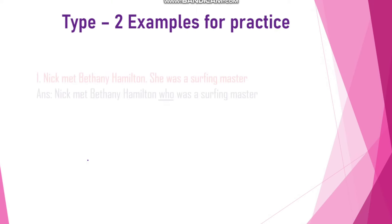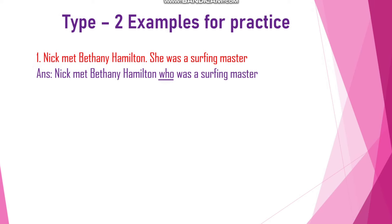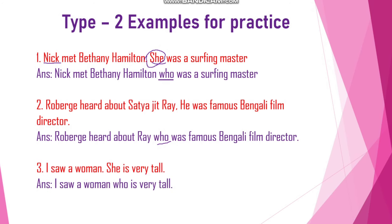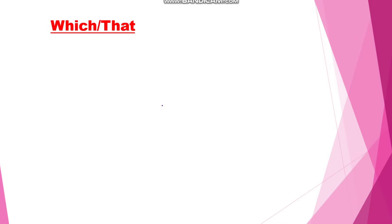Type 2 example: 'Nick met Bethany Hamilton. She was a surfing master.' The subjects Nick and she are different, so it belongs to Type 2. Round off the second subject and add 'who'. Answer: 'Nick met Bethany Hamilton who was a surfing master.' Next: 'Rabaj heard about Satyajit Ray. He was a famous Bengali film director.' Answer: 'Rabaj heard about Ray who was a famous Bengali film director.'